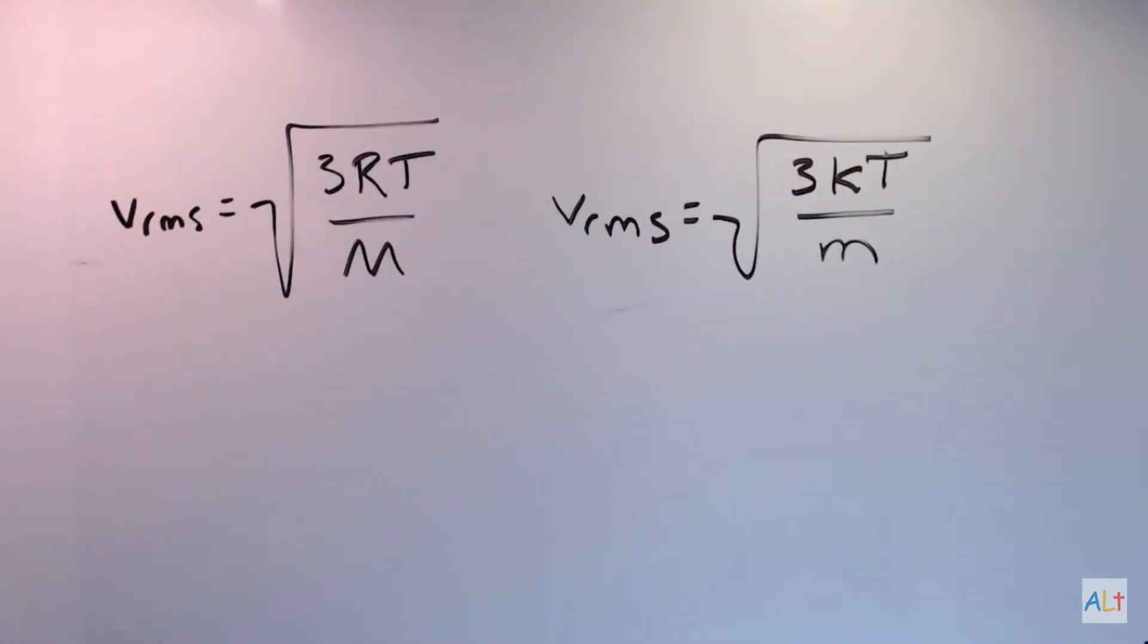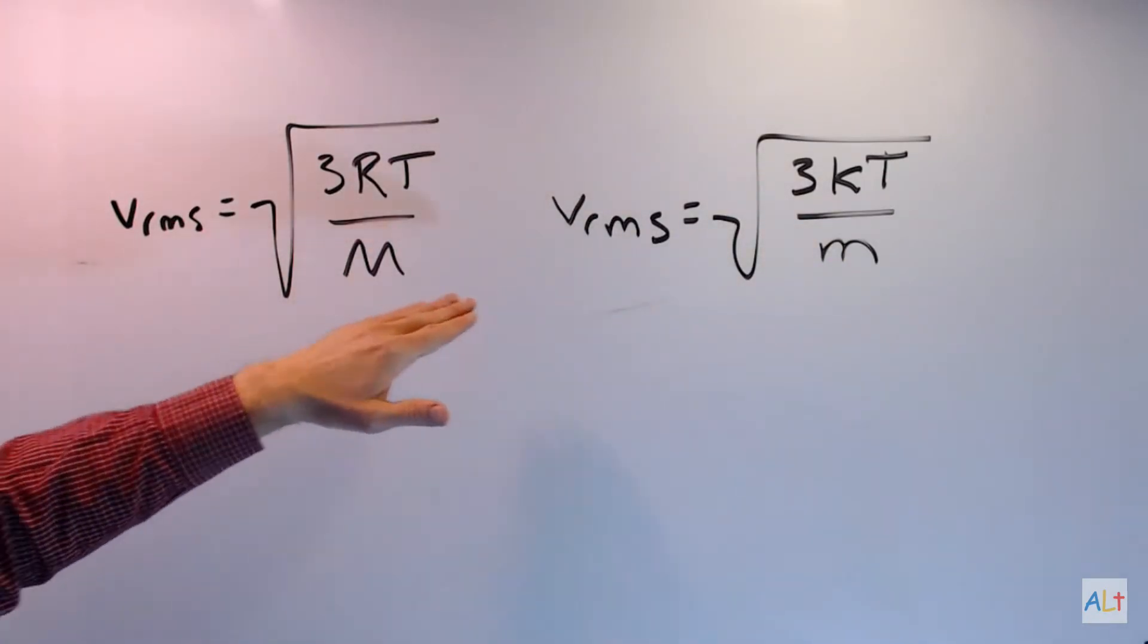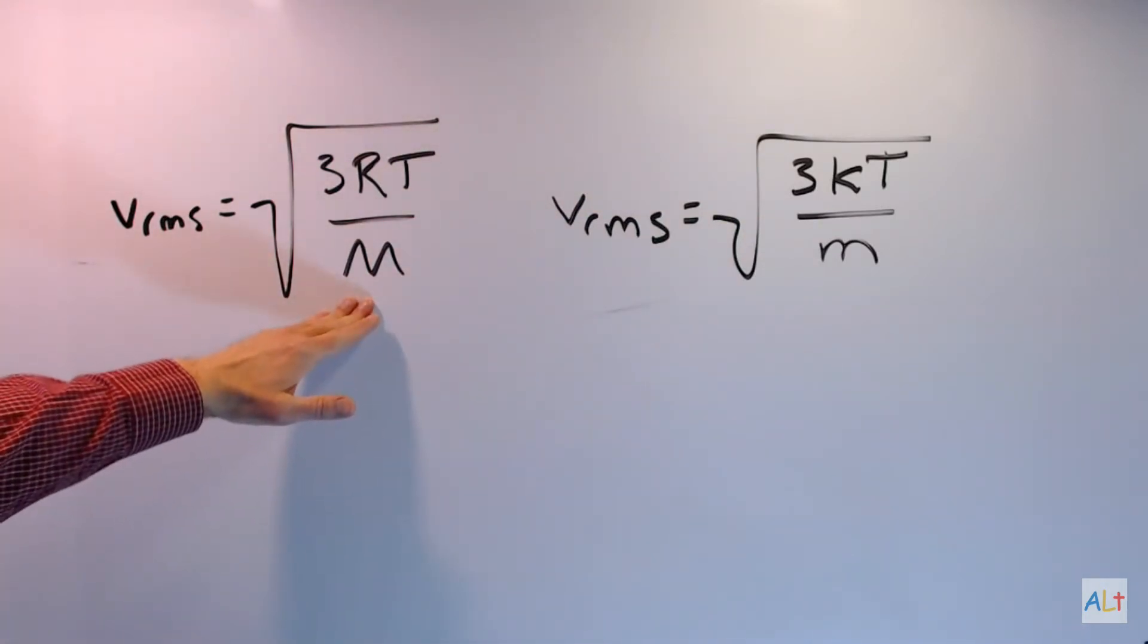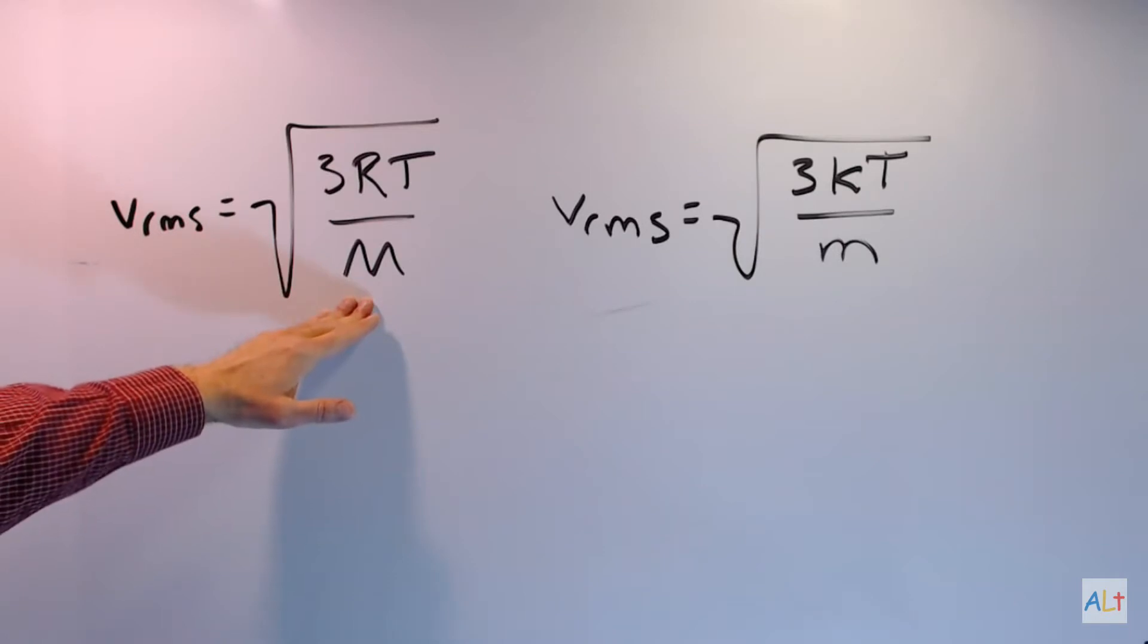So here we have a couple of formulas for root mean squared velocity for molecules of an ideal gas. One of these m's stands for molar mass, and one of them does not. This one is molar mass. It's the mass of one mole of your gas measured in kilograms.